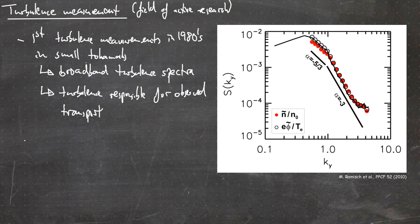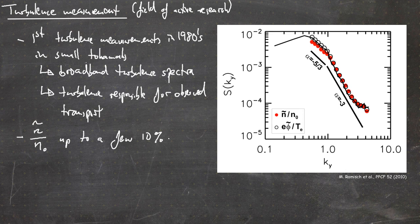Coming back to the measurements, the density fluctuations are up to a few tens of percent. The density variations can be up to a few tens of percent at the plasma boundary and up to a few percent more toward the plasma center. So it really depends where you are, but the amplitude of the variations can be really large.